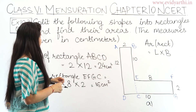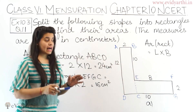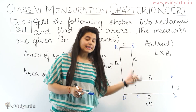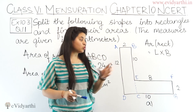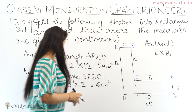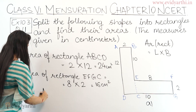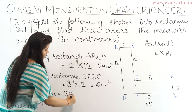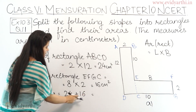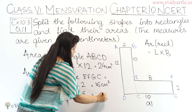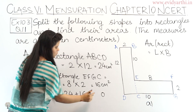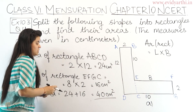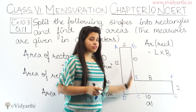Now we have the area of both rectangles. To find the area of the complete figure, we add the two rectangle areas together. The complete area = 24 + 16 = 40 cm square. So this is the area of this figure.